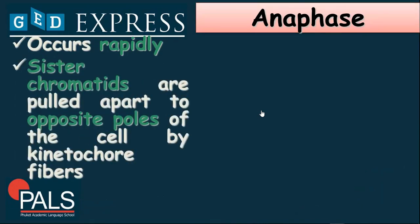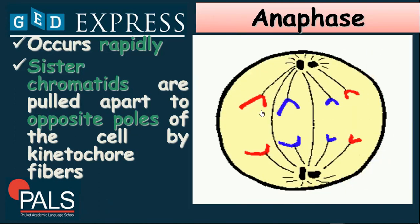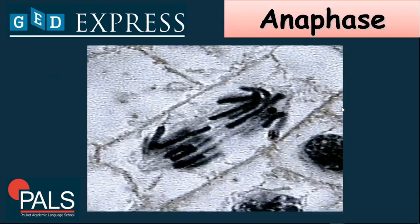Next, we have anaphase. After metaphase, we have the anaphase stage. This stage occurs rapidly. During this time, the sister chromatids are pulled apart to opposite poles of the cell by kinetochore fibers. So, during this time, the chromosomes are separated from each other. Unlike the metaphase stage where chromosomes are aligned at the equator, during anaphase the chromosomes are moving far from each other, going to their separate poles. Here is an illustration of the anaphase stage, showing the chromosomes separated and moving to opposite sides.